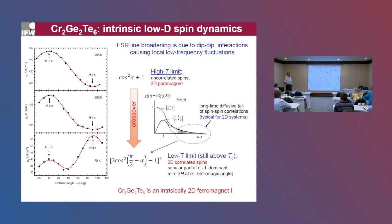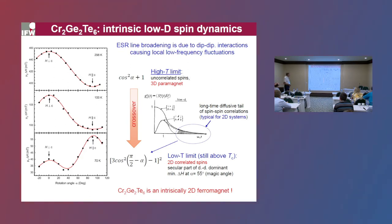In the short-time limit, all dipole-dipole interaction terms — secular and non-secular — contribute to the linewidth, giving a very specific cos²θ + 1 angular dependence, which we indeed observe at high temperature. However, in the 2D limit where the diffusive tail is prominent, only the secular part of the dipole-dipole interaction survives, giving a very distinct 3cos²θ − 1 angular dependence with a minimum at the so-called magic angle of 54°. This was the second evidence that chromium germanium telluride is an intrinsic two-dimensional ferromagnet in the bulk limit.